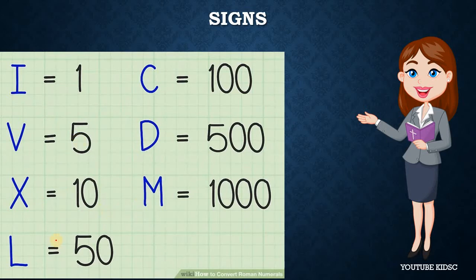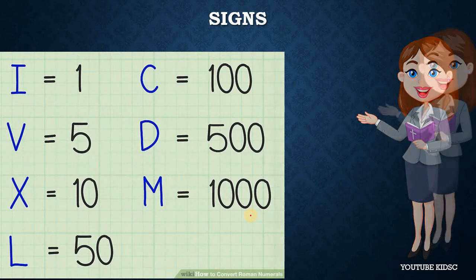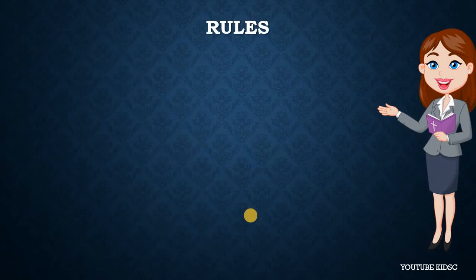Now let's see the signs. I stands for 1, V stands for 5, X stands for 10, L stands for 50, C stands for 100, D stands for 500, M stands for 1000. If you write these in a notebook you will remember them.